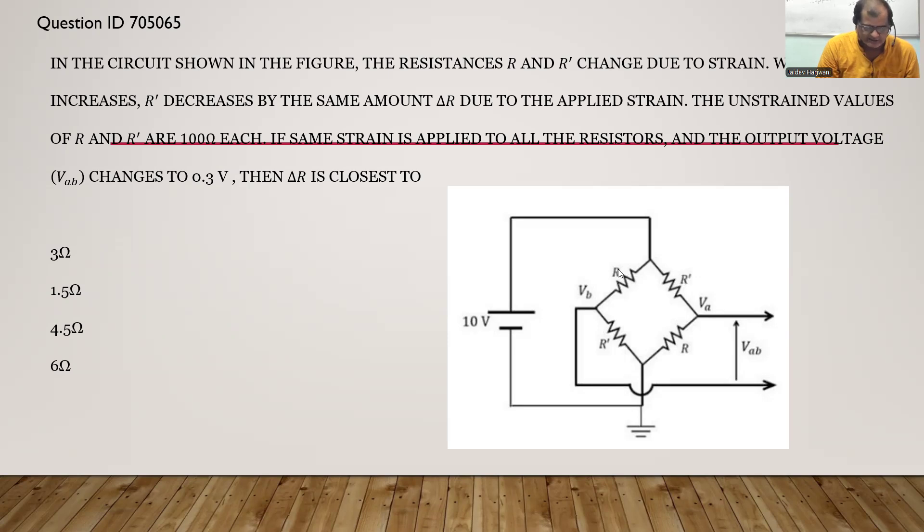I repeat the question. Initially the value of R and R' are same, so if you apply the voltage in the circuit, Vb is the voltage across R', Va is the voltage across R. Because R and R' are both same and the circuit is symmetric, the Vab will become zero.